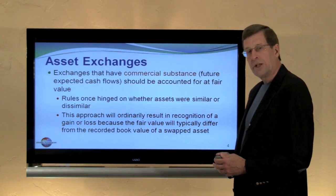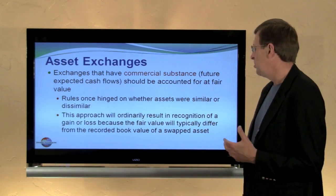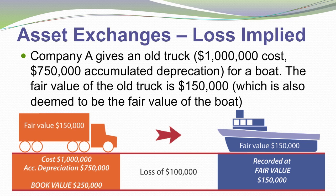This approach will ordinarily result in the recognition of a gain or loss because the fair value of the assets will typically differ from their book value. In this example, we have an asset exchange where a loss is implied. Company A gives an old truck that had a cost of $1 million but had $750,000 of accumulated depreciation recorded to date, giving it a $250,000 book value. That truck is being swapped for a boat in a transaction deemed to have commercial substance.